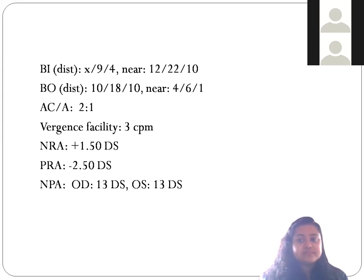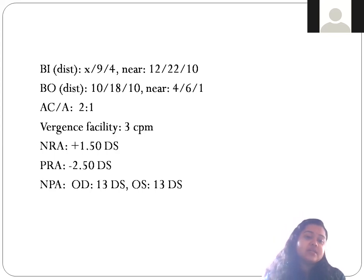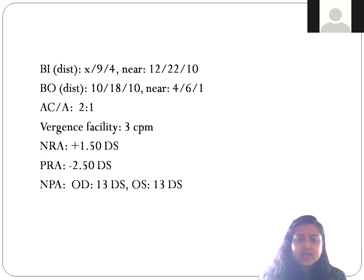Now doing the vergence margins test. The base-in value at distance: no blur, break at 9, recovery at 4. Near: 12, 22, and 10. Base out for distance: 10, 18, 10. Near: 4, 6, and 1. These are the base-in and base-out values.